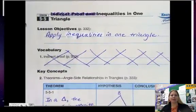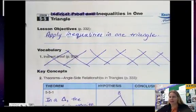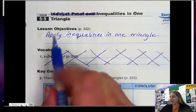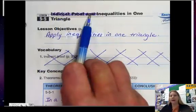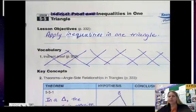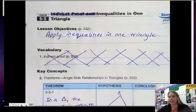Today we're going to talk about inequalities in one triangle. Section 5.5 also talks about indirect proof — I'm not going to teach that this year, so you can go ahead and cross that off. Our objective is to apply inequalities in one triangle.